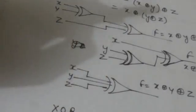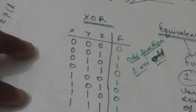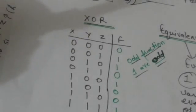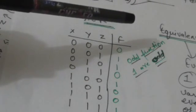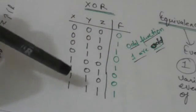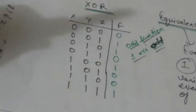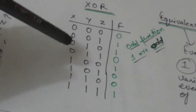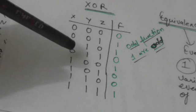These three circuits are equivalent because they give the same output for the same values of X, Y, and Z. Now, XOR is an odd function — the value of this function will be 1 when the input variables have an odd number of 1s. For example, when X, Y, and Z are all 1, there are three 1s — an odd number — so the function value is 1. When there is only one 1 in the input, that is also odd, so the function value is 1.